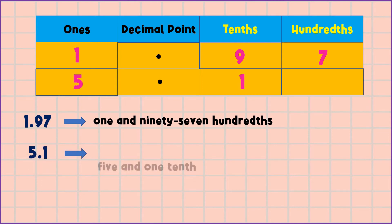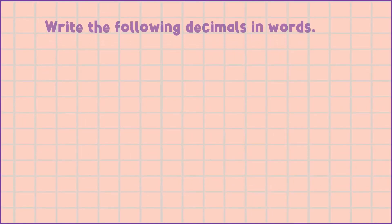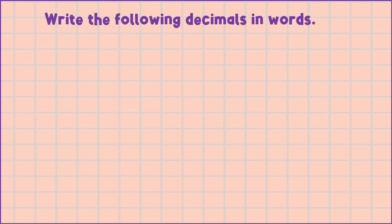In words we write like this: one and ninety-seven hundredths. Another example: how do we read this number? This is five and one tenth. Let's have a short exercise. Write the following decimals in words.